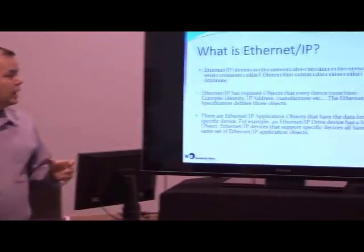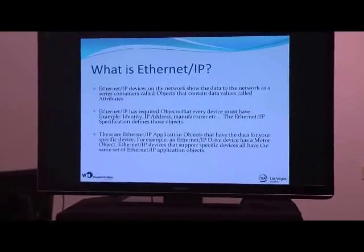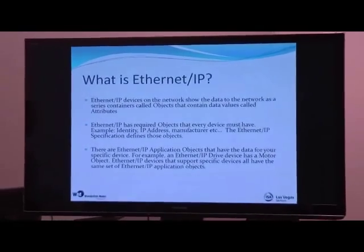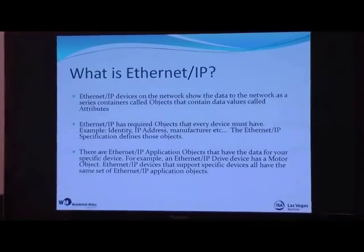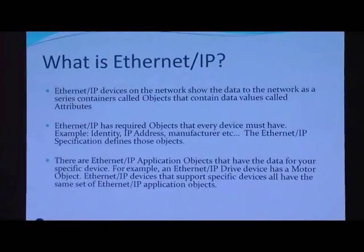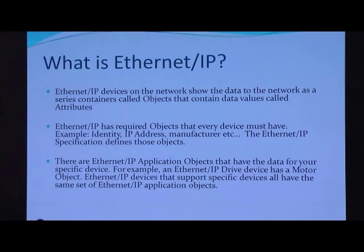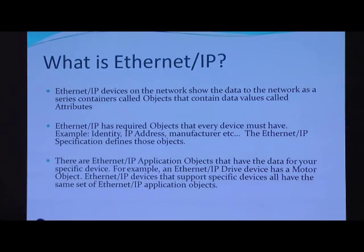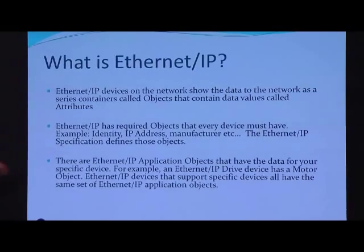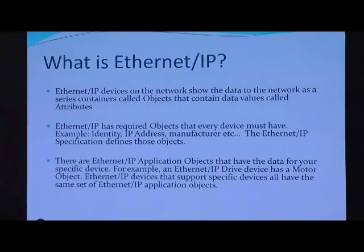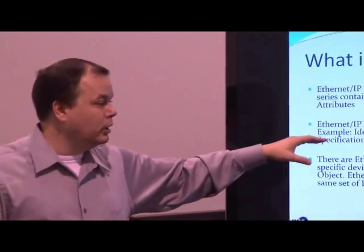Another important piece of information about Ethernet IP is that the specification requires vendors to encapsulate their data in objects. Objects contain the individual values of the device as attributes. Within a device there are two sets of objects: required objects that by specification must exist, and application objects that hold all of the process data. The required objects identify the device on the network — IP address, identity, and communication parameters — while the application objects contain all the process data unique to that device.